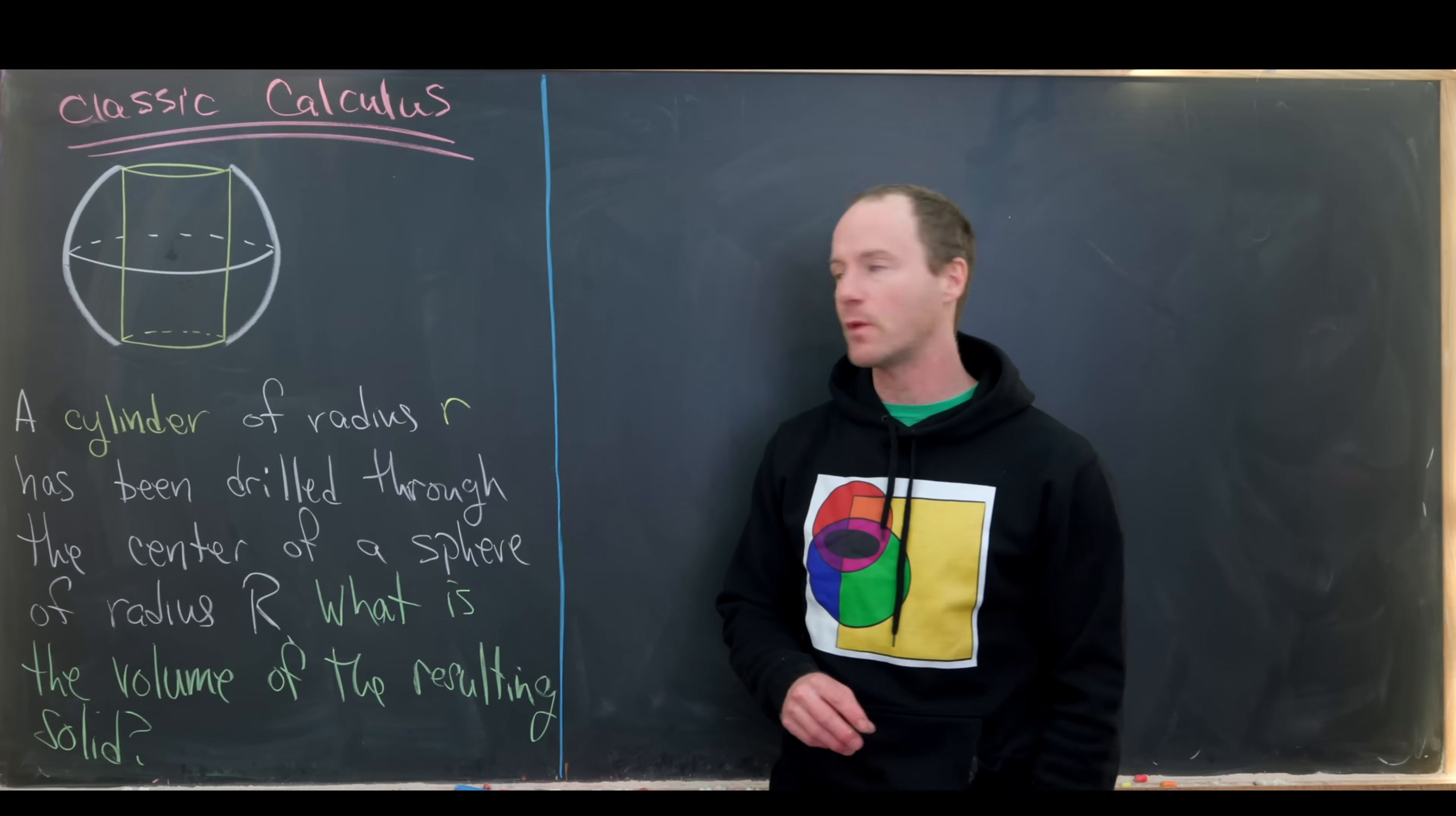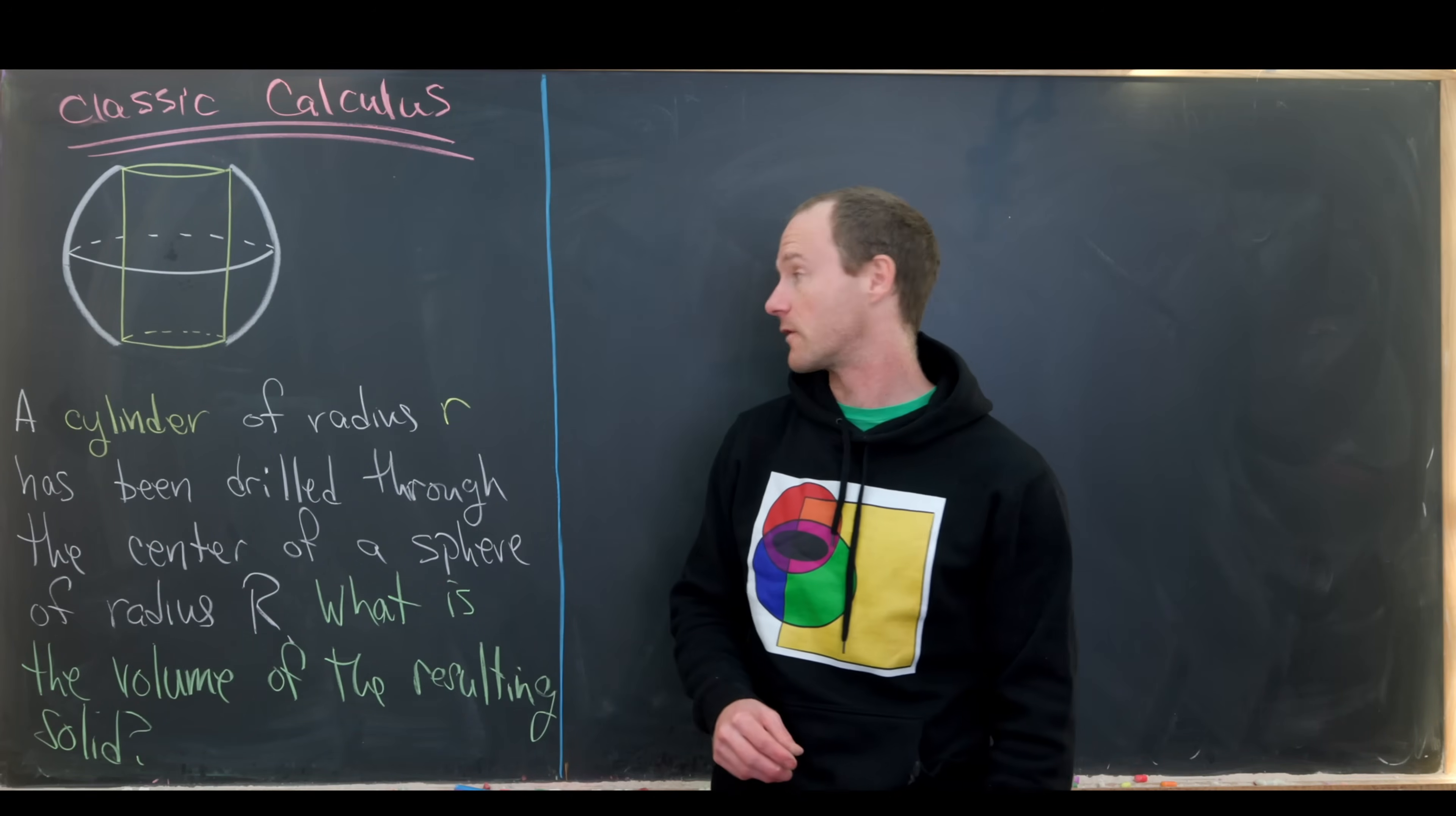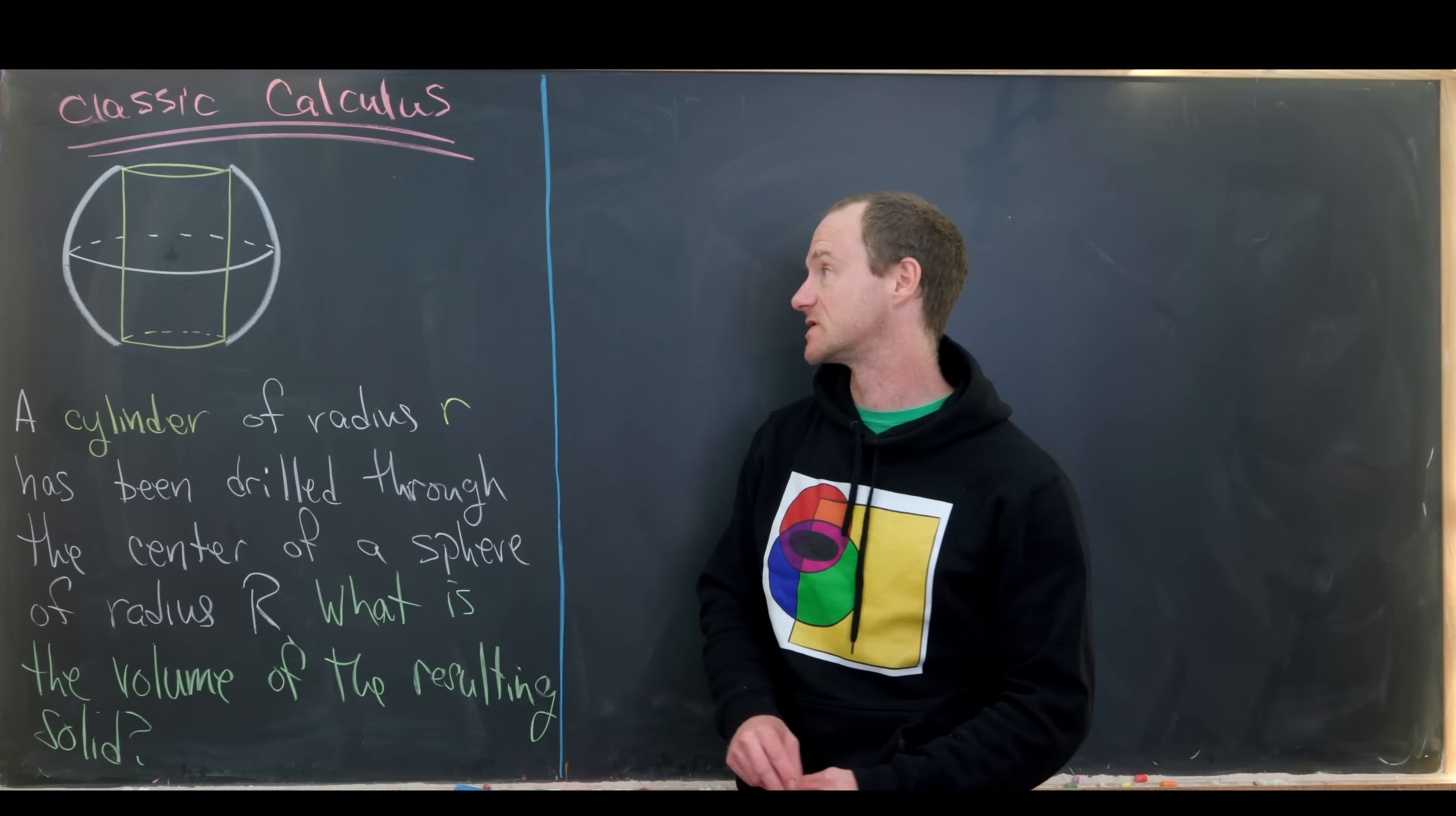So let's see what we have. We have a sphere with radius capital R, and through that sphere we have drilled a cylinder of radius little r, so lowercase r will obviously be smaller than capital R, and then our final goal is to find the volume of the resulting solid.